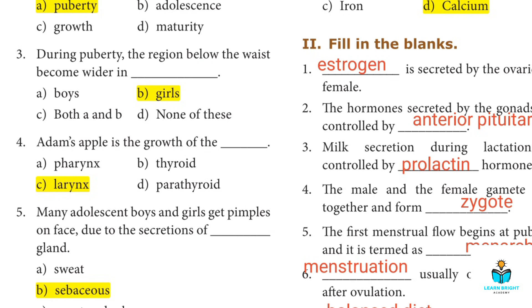Fourth: Adam's apple is the growth of the? Answer C: Larynx.